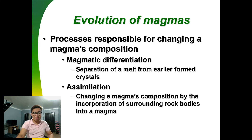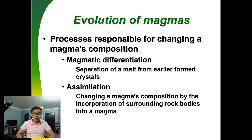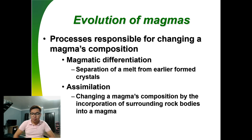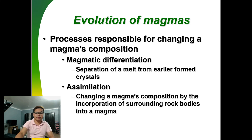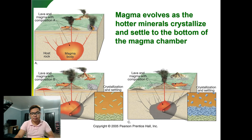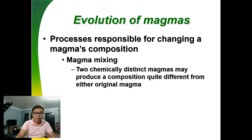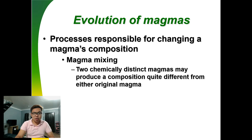The evolution of magma involves magmatic differentiation — the separation of the melt from earlier-formed crystals. Assimilation is the process where the magma incorporates the composition of surrounding rock into the magma. Magma mixing involves combining magmas to produce a composition quite different from either original magma.